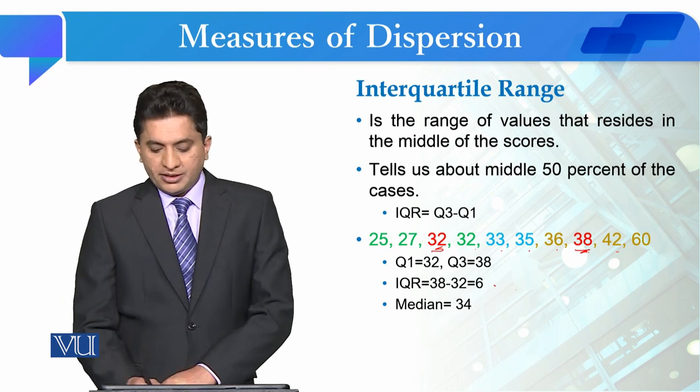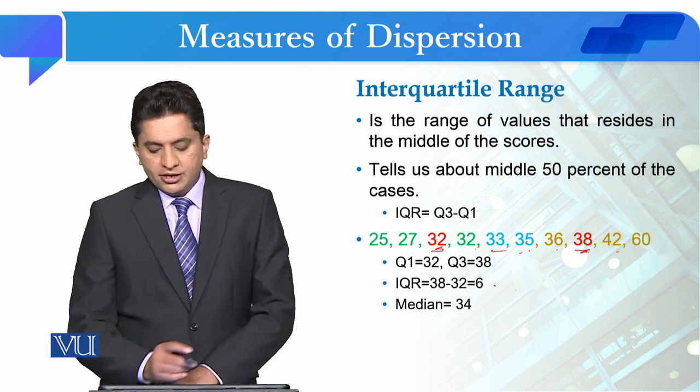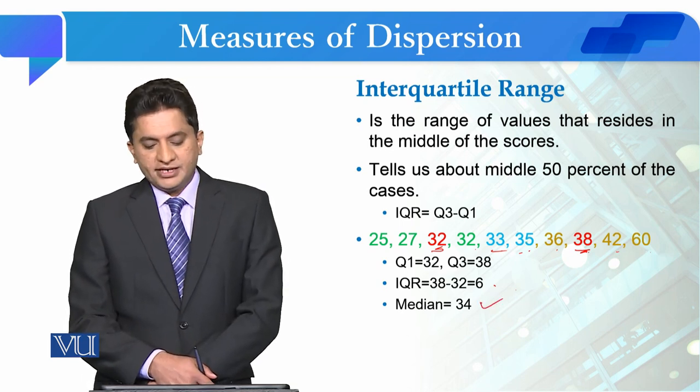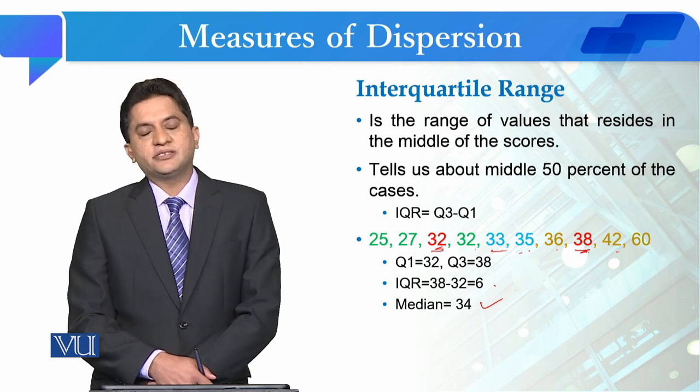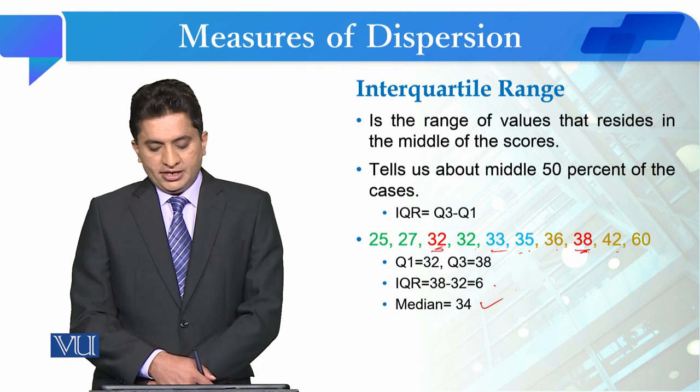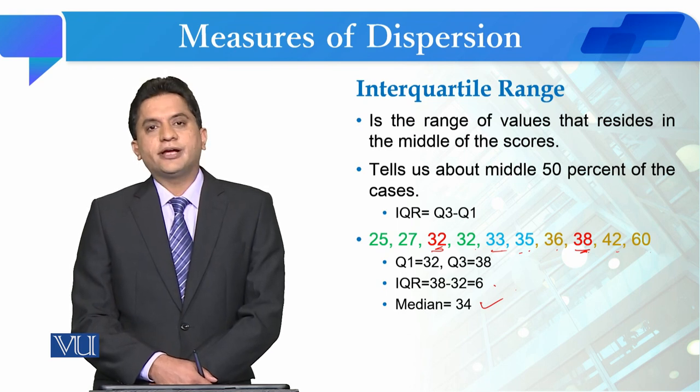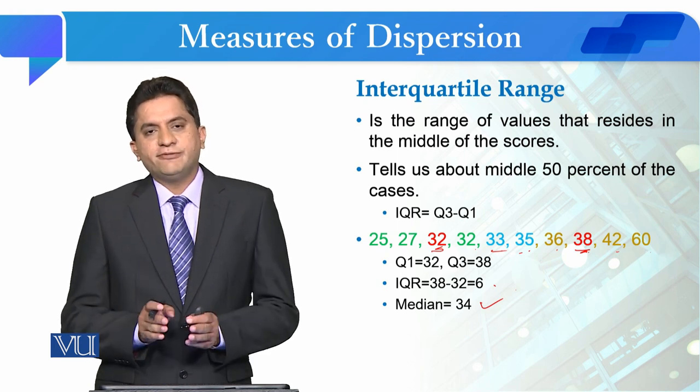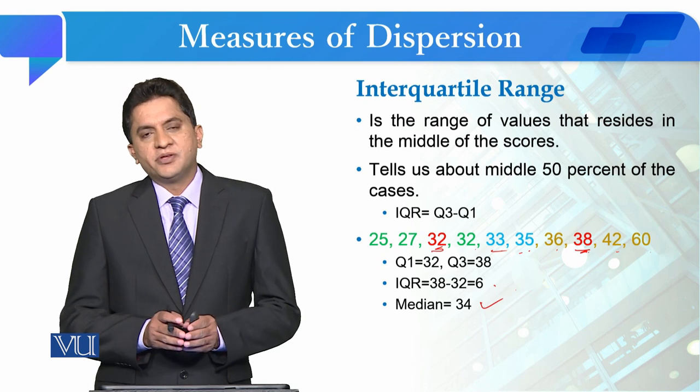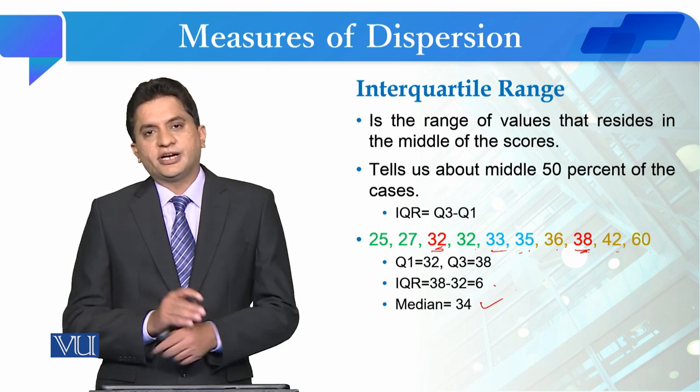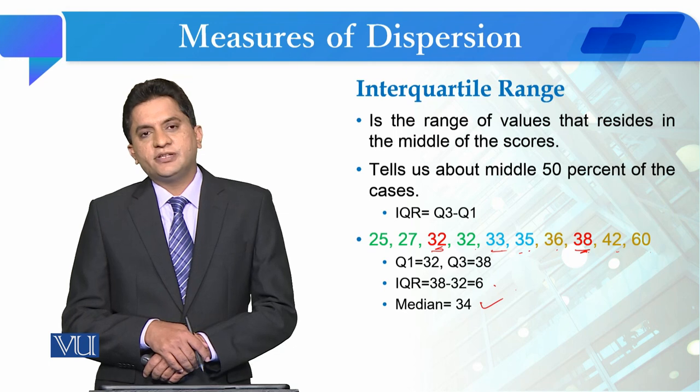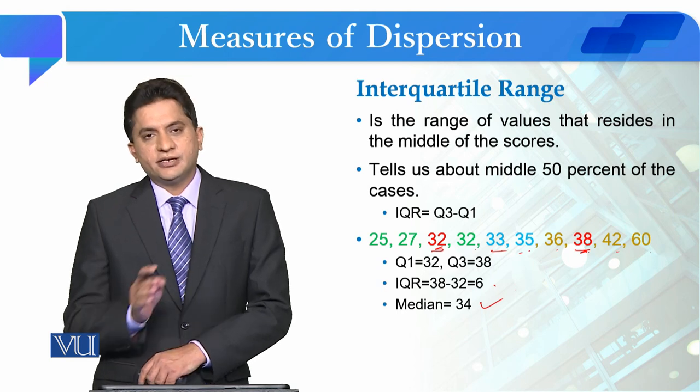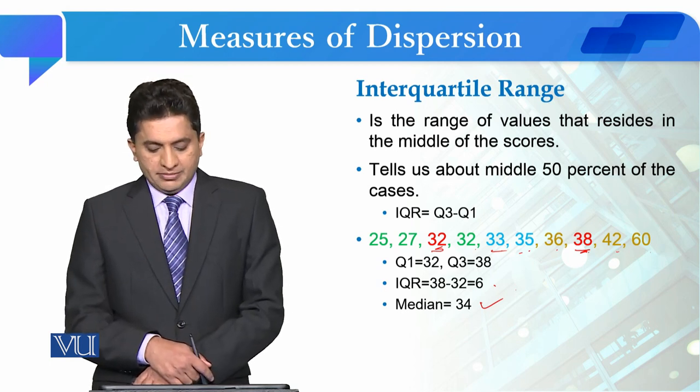If we find the median, it's 33 plus 35 divided by 2, which is 34. So this helps us understand that if the median of this data is 34, then the IQR is 6, meaning 6 values vary from 34 towards both sides. That is, 50% of the data is around 34 plus or minus 6.